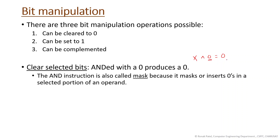For example, suppose we have 0110. To insert zero at a selected position, use the mask 1101 and perform AND: 0 AND 1=0, 1 AND 1=1, 1 AND 0=0, 0 AND 1=0, giving result 0100 — the selected bit has been cleared to zero. This is the masking process.